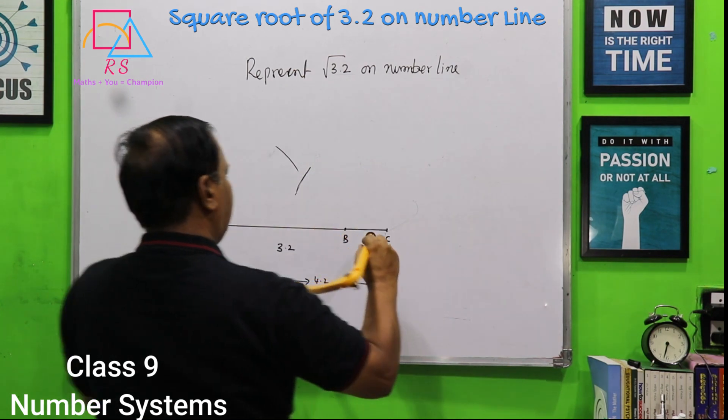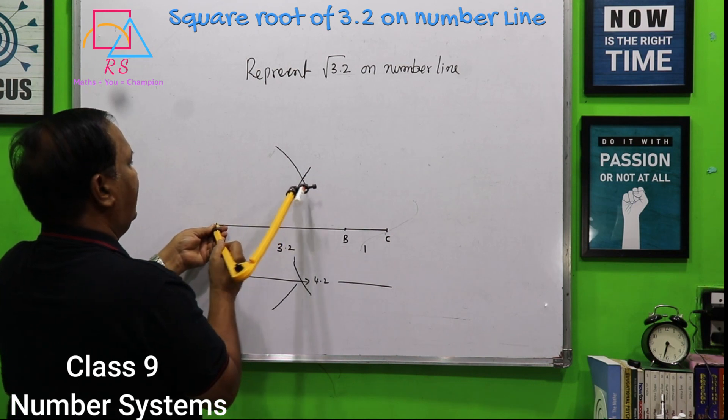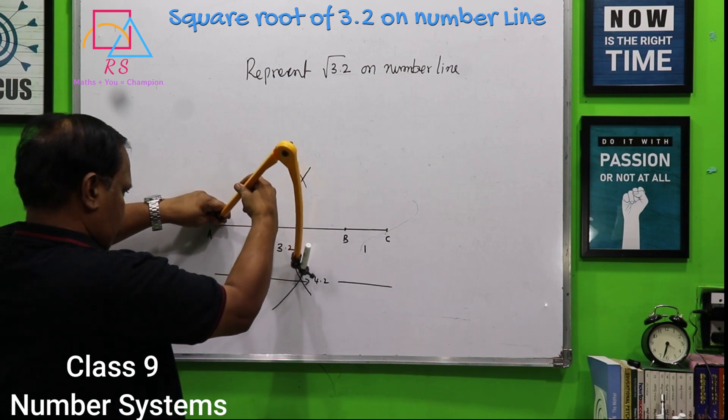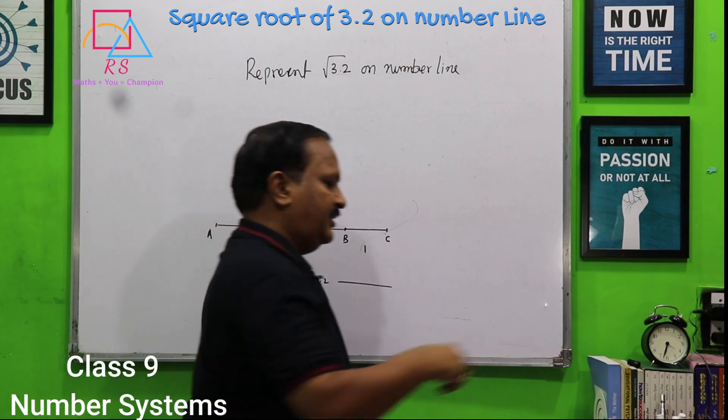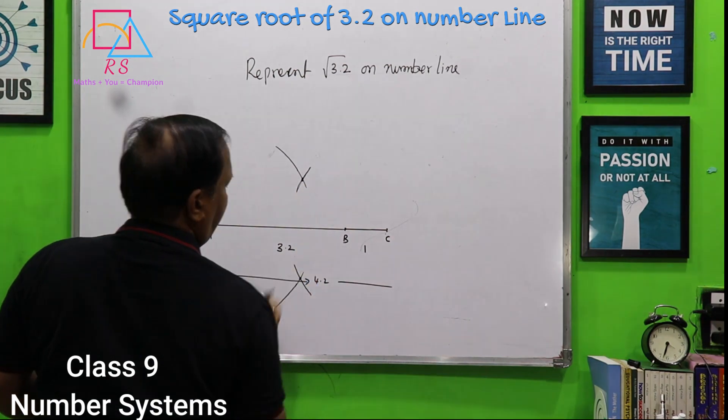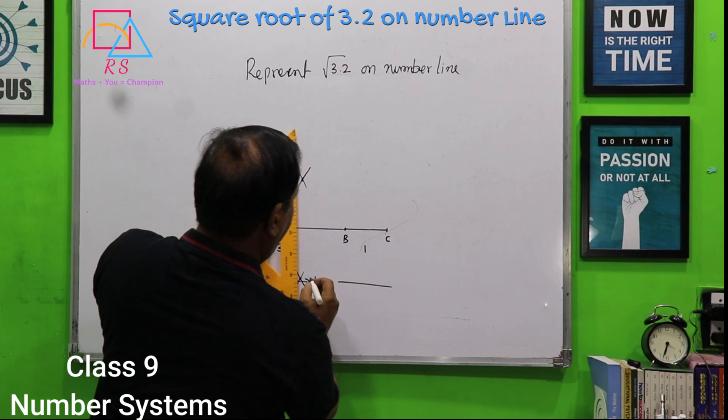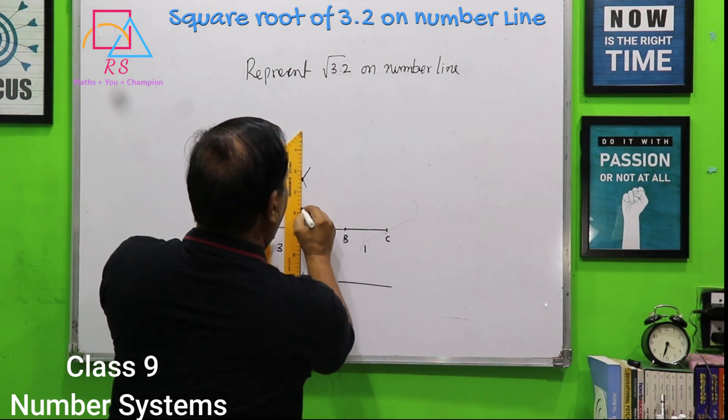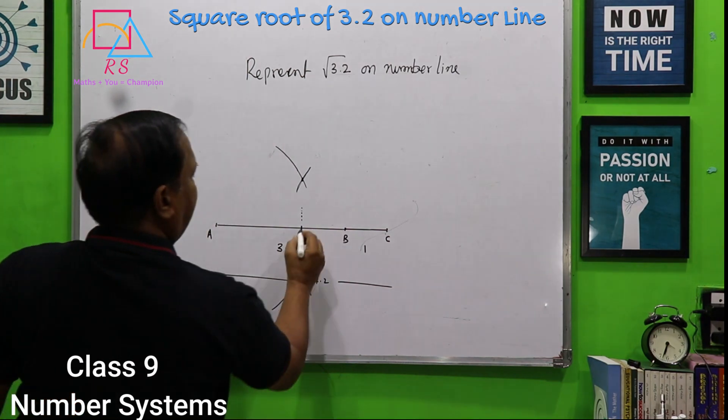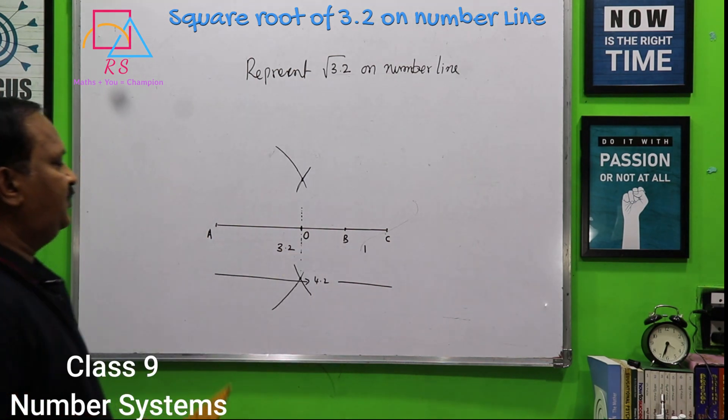You have to extend. You have to be very careful that the radius should not be changed. Now I got two points. Then I will take again my scale and I will use these dots. This is the midpoint. So, let us say this is O.